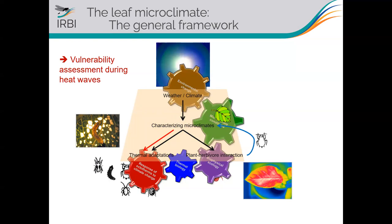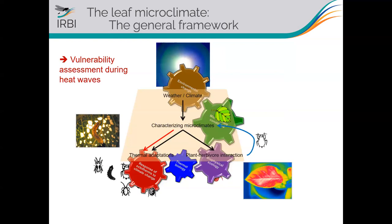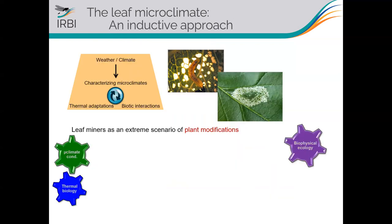The first step was applying this framework to a single species using an inductive approach. We targeted a species for which there is obvious modification of the plant tissues by the insect herbivore — an extreme scenario of plant modification. We found this using a leaf miner: the caterpillar lives inside the plant tissues, attacking apple leaves.